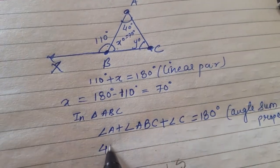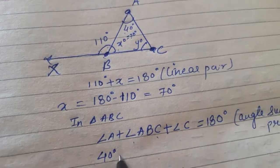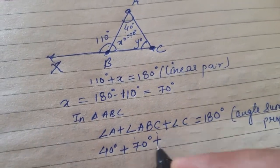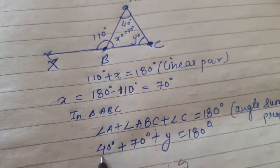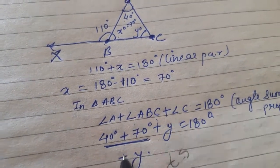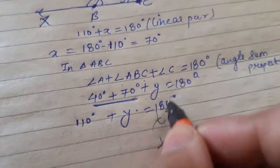So angle A, value of angle A is what? 40 degrees. ABC - its value is 70 degrees. And angle C is what? It is y, is equal to 180 degrees. 40 degrees plus 70 degrees, it is 110 degrees, is equal to 180 degrees.